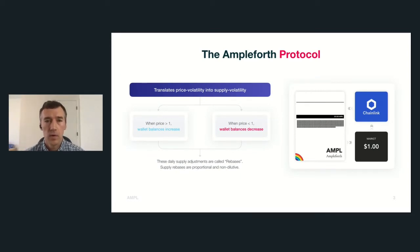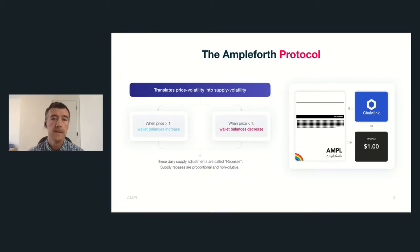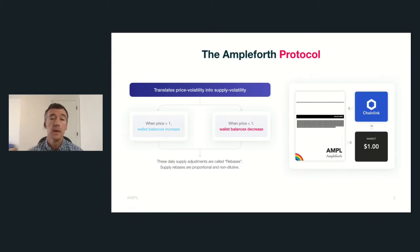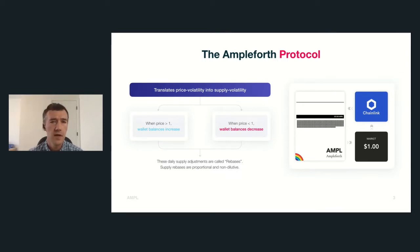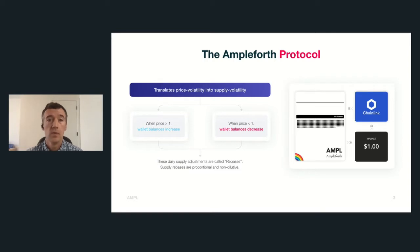The Ampleforth Protocol is fairly simple. It has a supply policy that exists purely on-chain, determined by rules. So every day, what it does is it compares the price of Ample in the marketplace to the price target. Ample targets the 2019 US dollar, which is roughly $1 today, a little bit more. Each day, if the price of Ample is above the price target, it means that the supply needs to increase. And when the price is below the price target, it means that supply needs to decrease in order to maintain equilibrium.